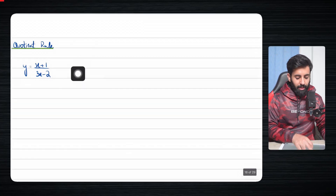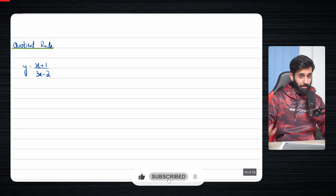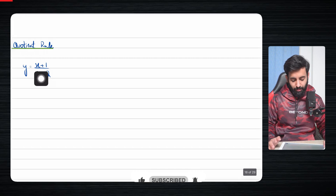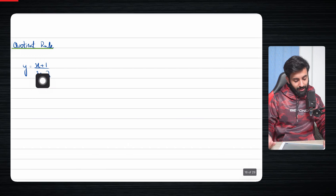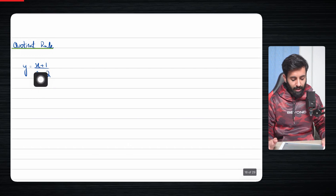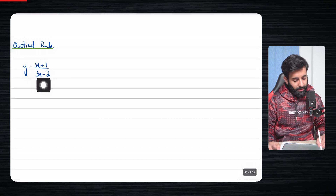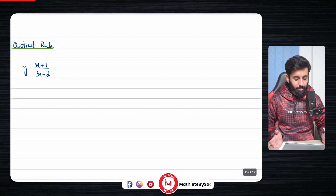In this video we're going to learn how to use the quotient rule. Whenever you have an expression in the form of a fraction, such that it consists of two different expressions and you can't write them as a single expression — like you can't simplify x plus one over three x minus two — that is when you can use the quotient rule.